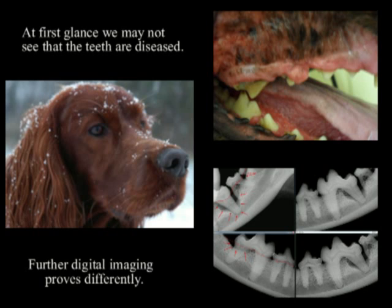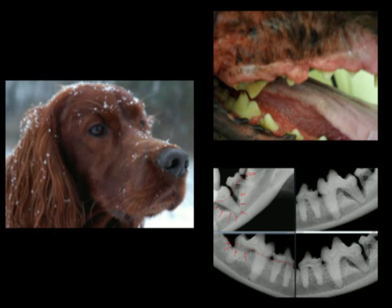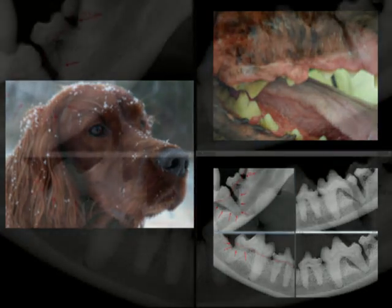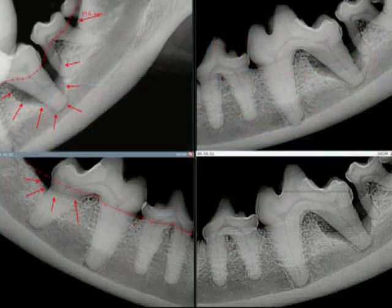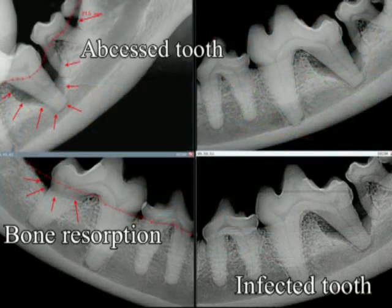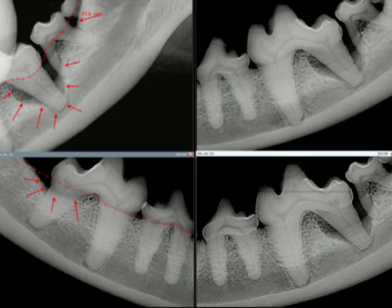At first glance, we may not see that the teeth are diseased. Only with digital imaging can we see what's really happening and what the pet is really dealing with. In this example, we can clearly see an abscessed tooth, bone resorption, and even an infected tooth all in the same patient.